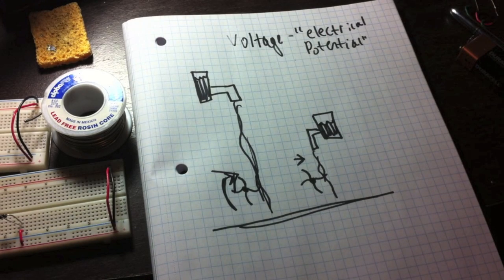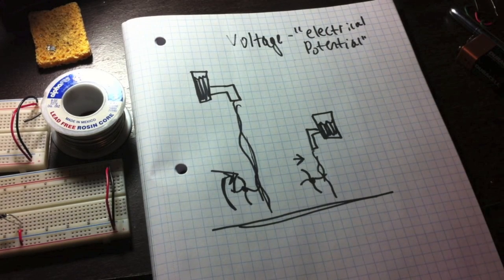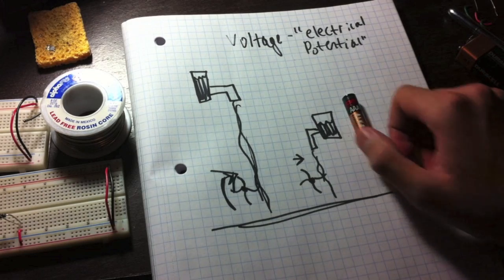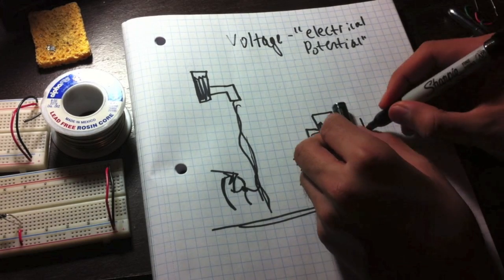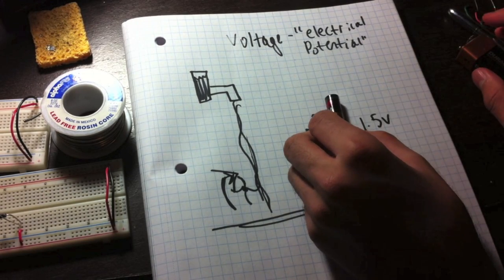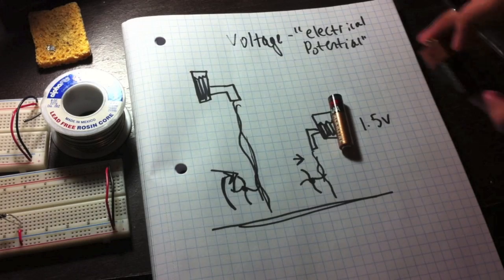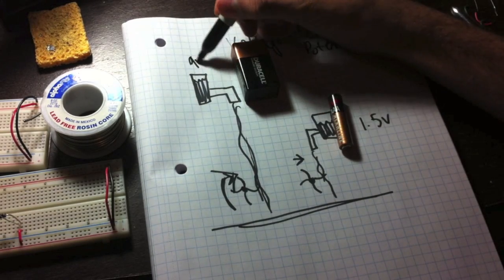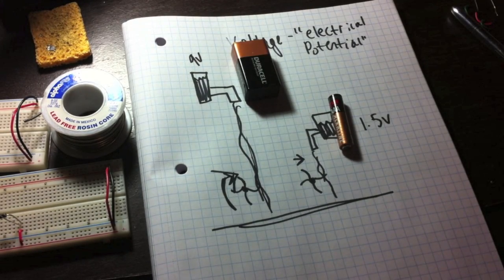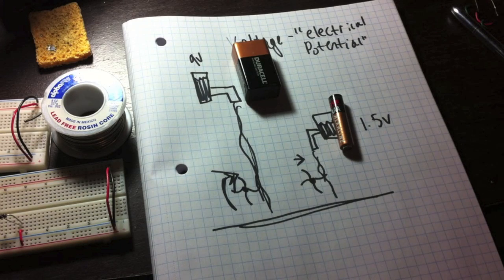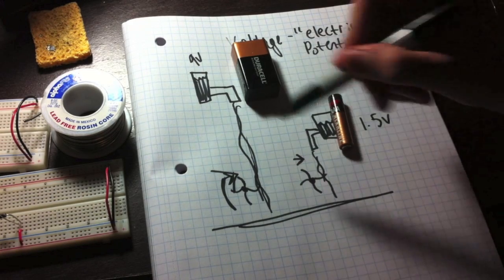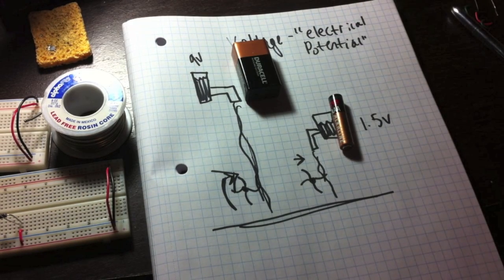So think of the voltage of a battery like this demonstration. Think of this as a 1.5 volt. Think of this as like the 9 volt battery. The higher the voltage, the greater the difference, so therefore the greater the potential.